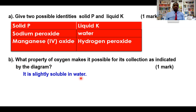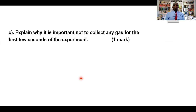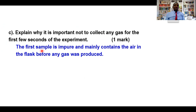Number two: explain why it is important not to collect any gas for the first few seconds. This is because when the experiment is starting, there are some gases that are already in the flask. Therefore, you allow the first few bubbles to escape so that you can collect a pure sample. The first sample is impure and mainly contains the air initially in the flask before any gas was produced. That's why we don't collect the first few bubbles.